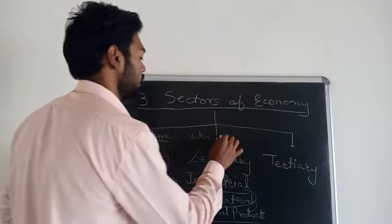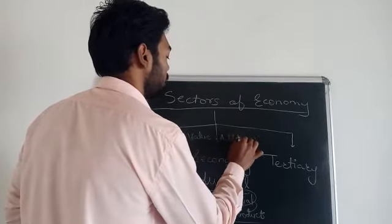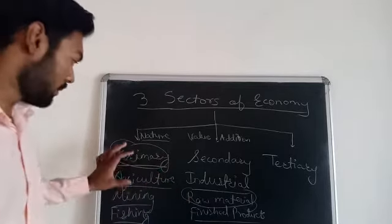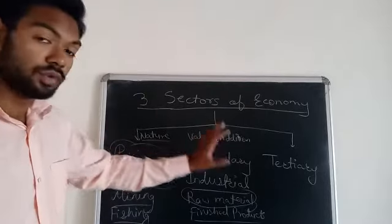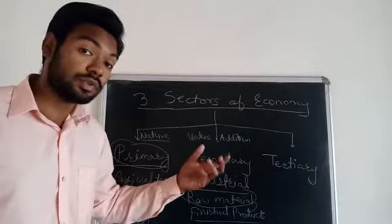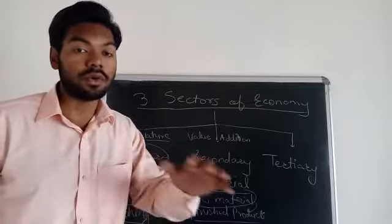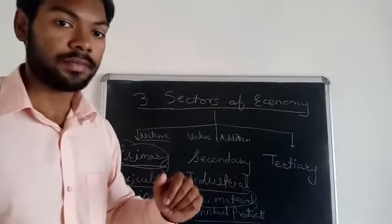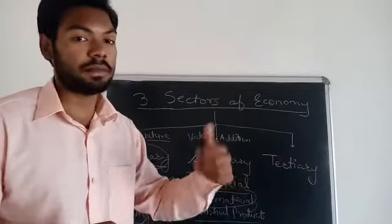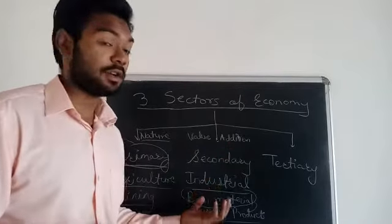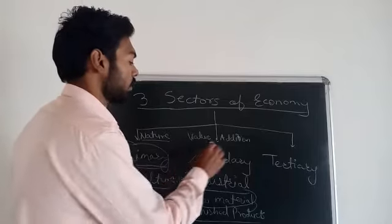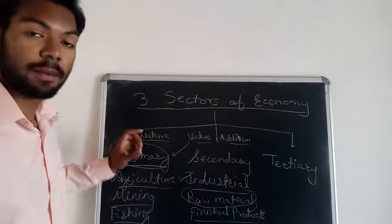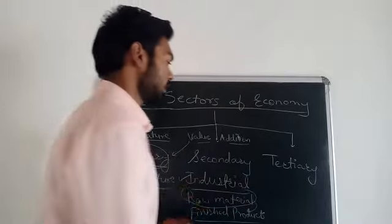The secondary sector is the sector of the economy that does the work of value addition. We get raw materials from the primary sector — from agriculture, mining, and fishing — use them in industries, do some processing, and convert them into finished products or goods. These finished products are then sold in markets to consumers, who pay money for them. That is how the secondary sector adds value to what comes from the primary sector.